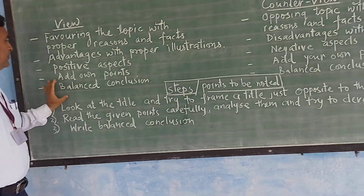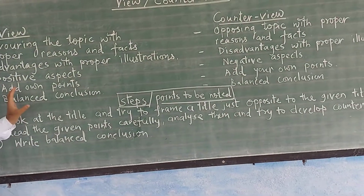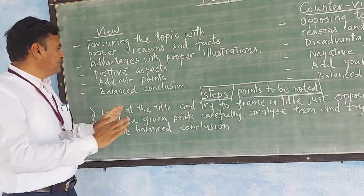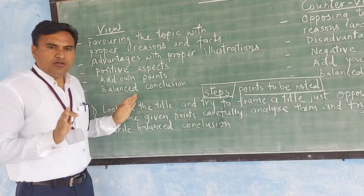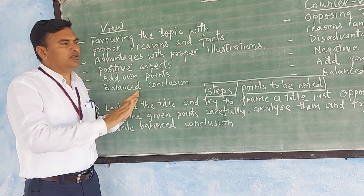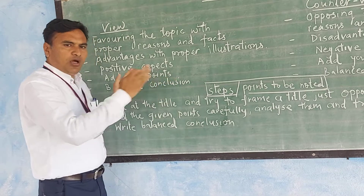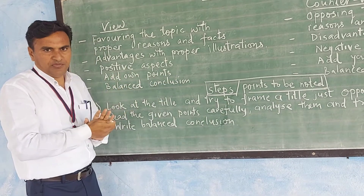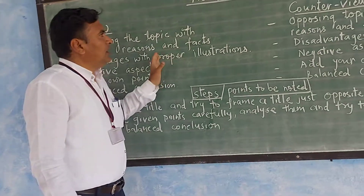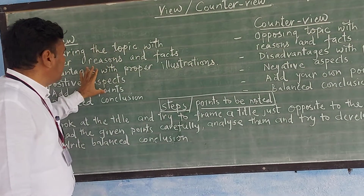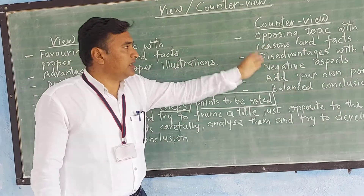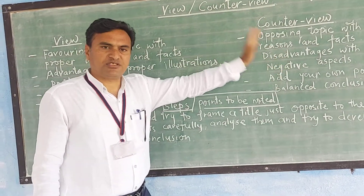The conclusion should be balanced — of both view and counter view. Since nothing is completely right or nothing is completely wrong, you have to balance the conclusion. In this sense, view and counter view points are given to you, and you have to develop the against side, the other side of the same subject.